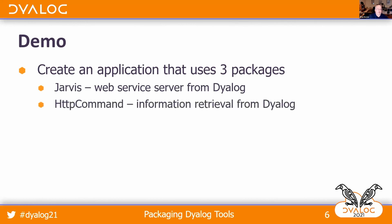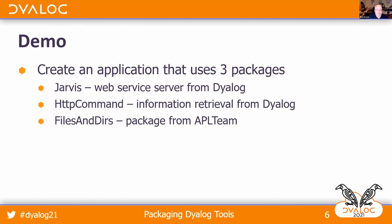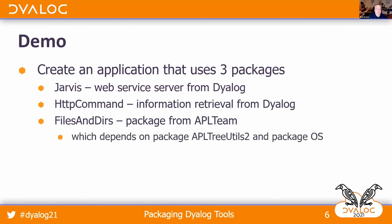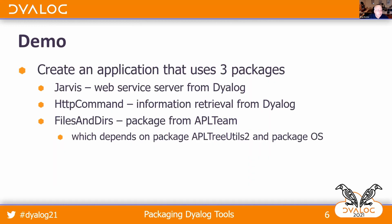Today we're going to create an application that uses three packages: Jarvis, which is a web service server from Dyalog; HTTPCommand, a utility we use to process HTTP requests, also from Dyalog; and a FilesAndDirs utility package that does cross-platform file manipulation, from APL Team, which is Kai's company. FilesAndDirs depends on APLTreeUtils2 and OS, and OS itself also depends on APLTreeUtils2 — so we've got some dependencies working here.